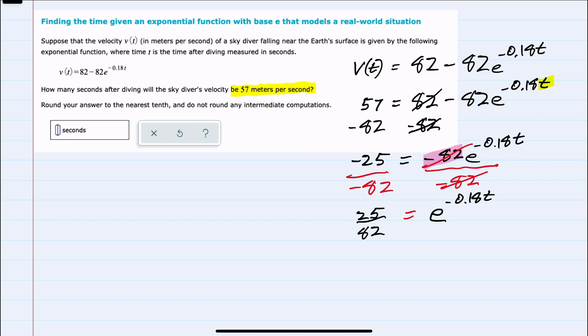And from here, to get the t out of the exponent, I would want to introduce logarithms. And in particular, since the base is e, I would want to use natural logs on both sides, because on the right-hand side, the log base e of e to the negative 0.18t will simplify to just that exponent. So we can see that we have the t no longer in the exponent.